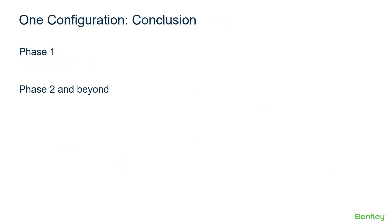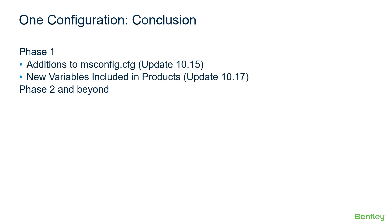In conclusion, regarding one configuration, phase one of one configuration is actually complete. This started in the Update 15 based power products and involved additional include statements in the ms.config file using the product group and subgroup names. In Update 17, each power product hard-coded the product group and subgroup variables so that these no longer needed to be created by an engine name mapping.